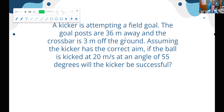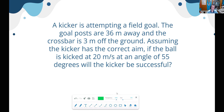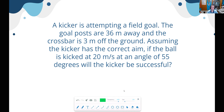Moving on to the next problem: for those international viewers, go look up a video of a kicker kicking a field goal in American football. A kicker is attempting a field goal. The goalposts are 36 meters away and the crossbar is 3 meters off the ground. Assuming the kicker has the correct aim, if the ball is kicked at 20 meters per second at an angle of 55 degrees, will the kicker be successful — will they get the ball above the crossbar?